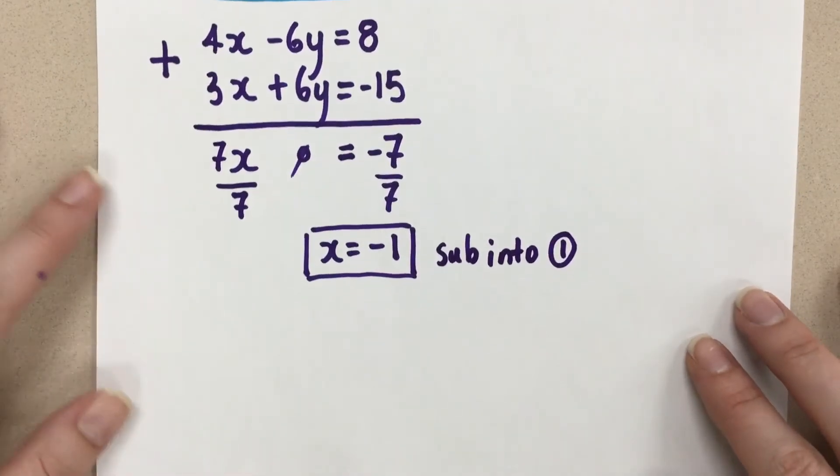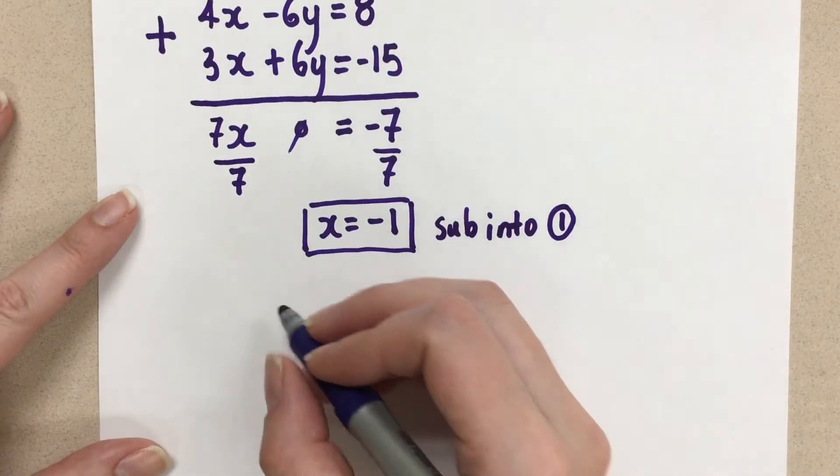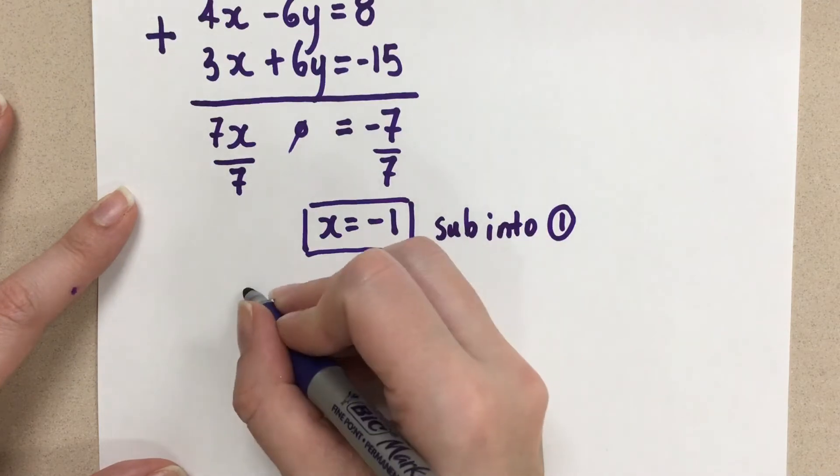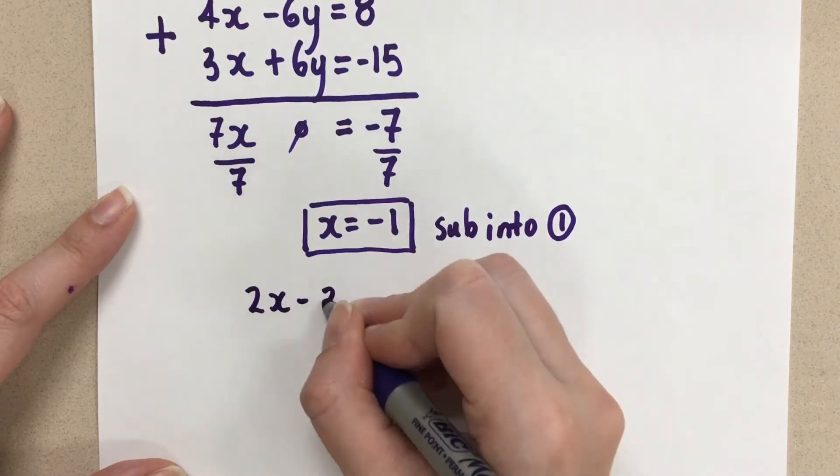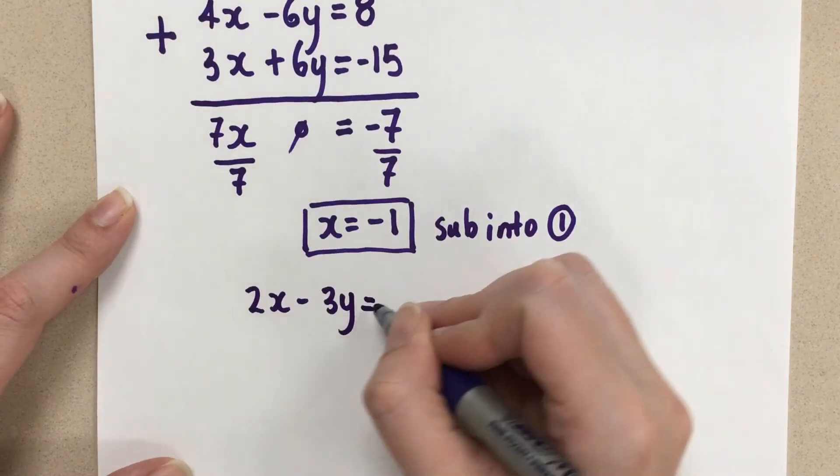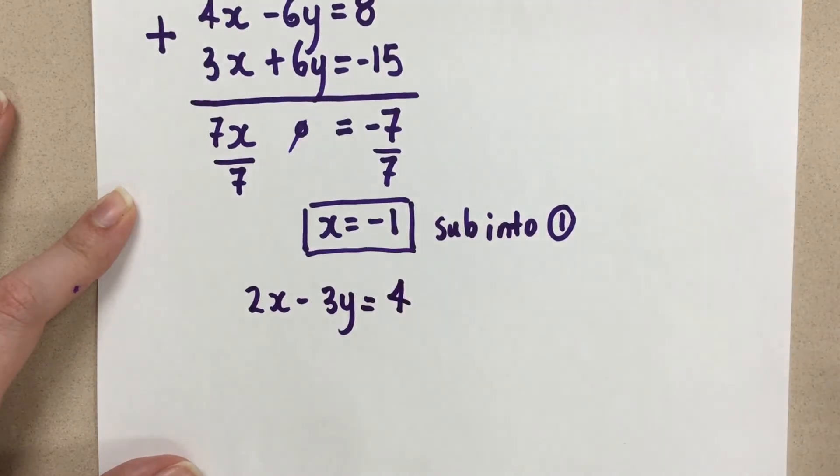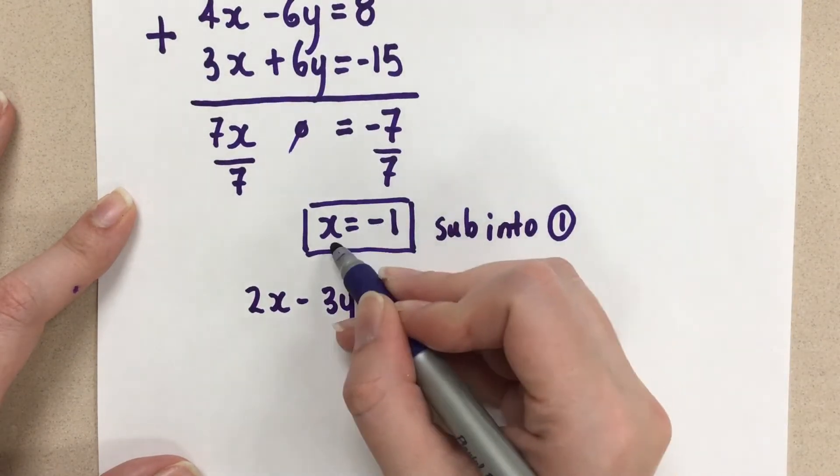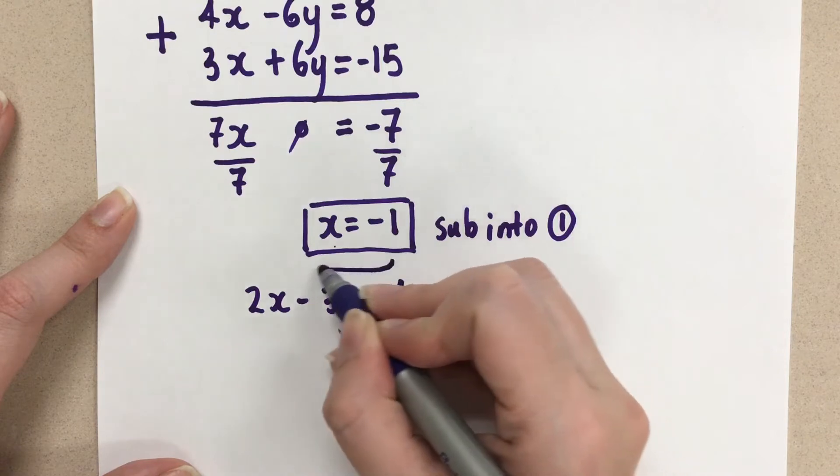So let's bring equation 1 down. So that was 2x minus 3y equals 4. So now we know that x equals negative 1. We solved that.